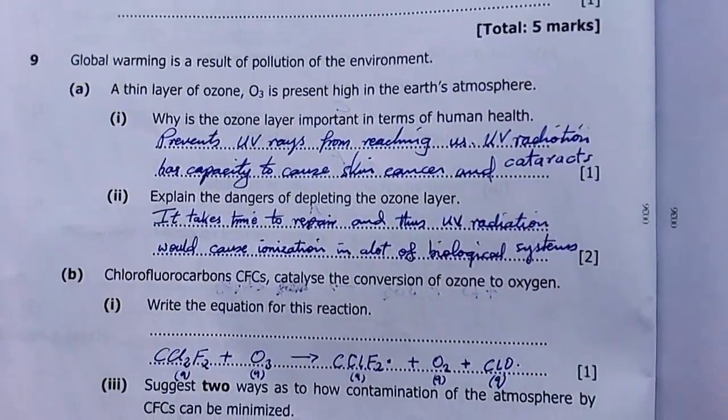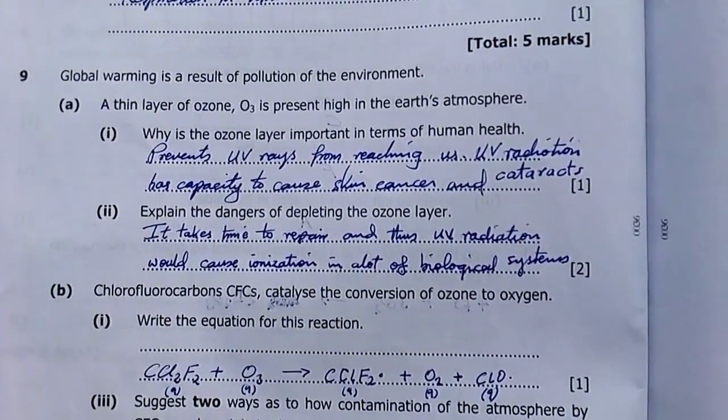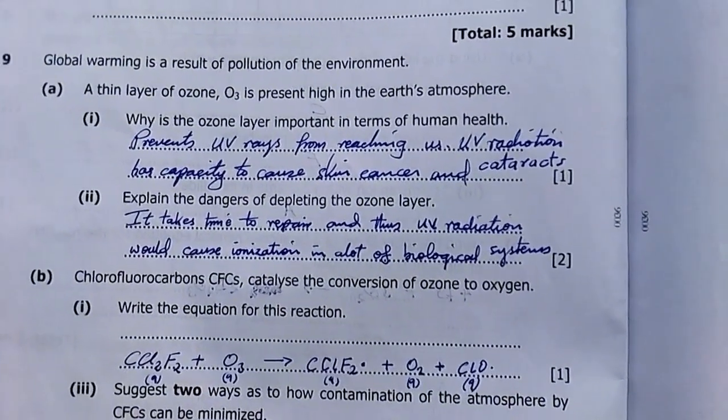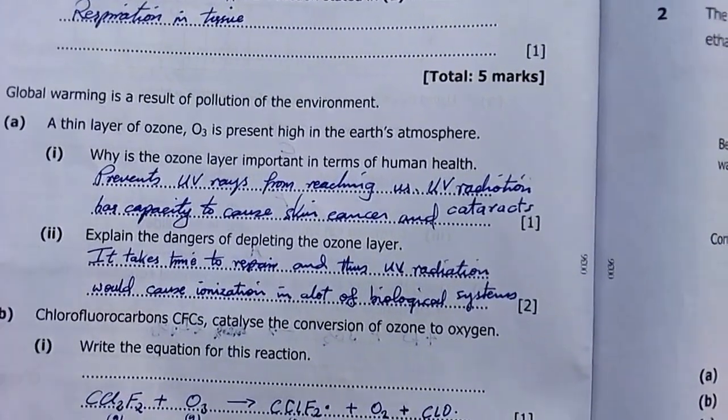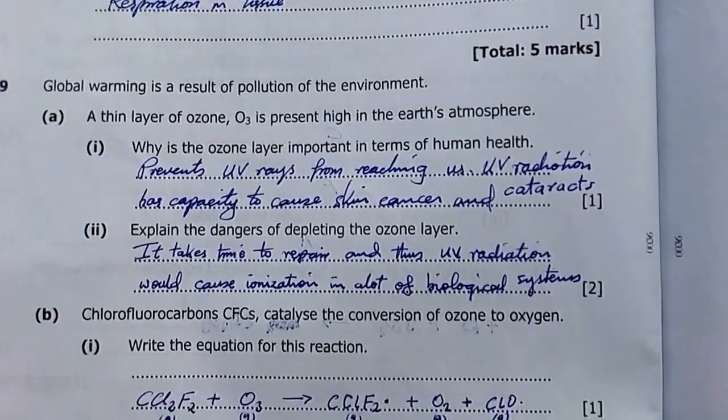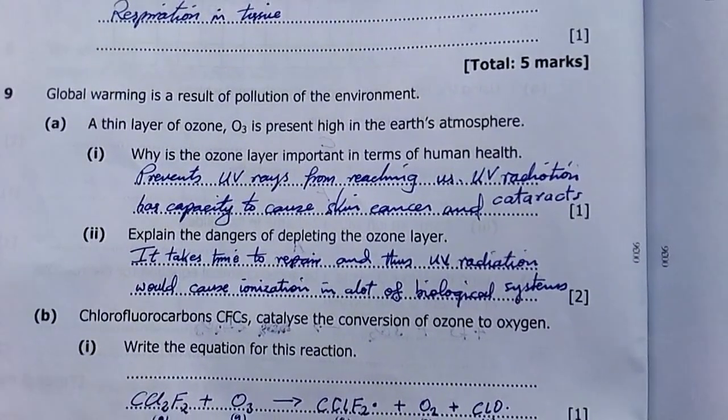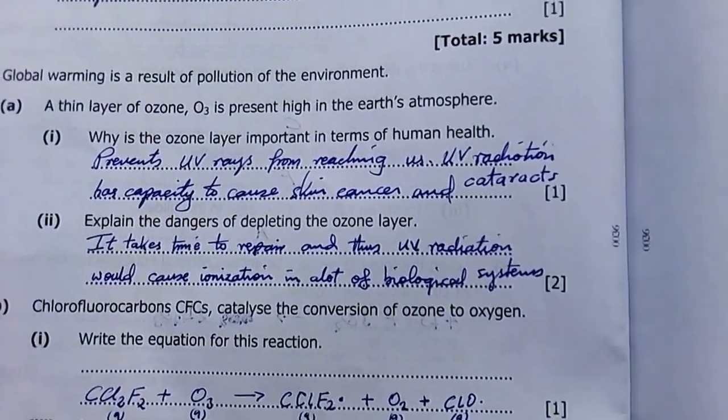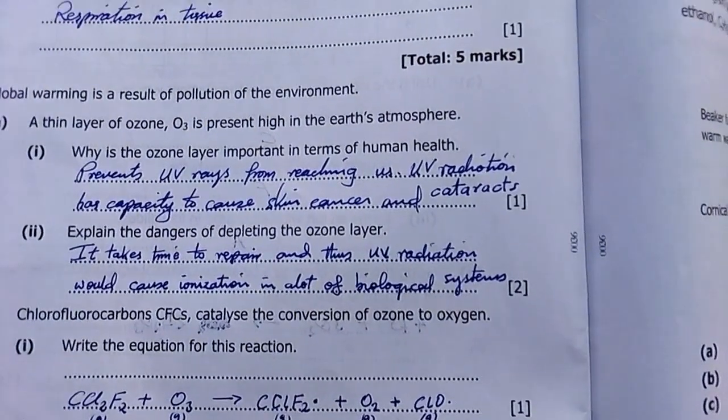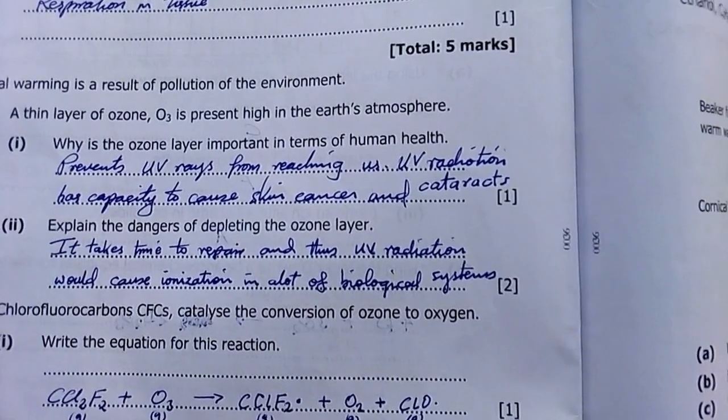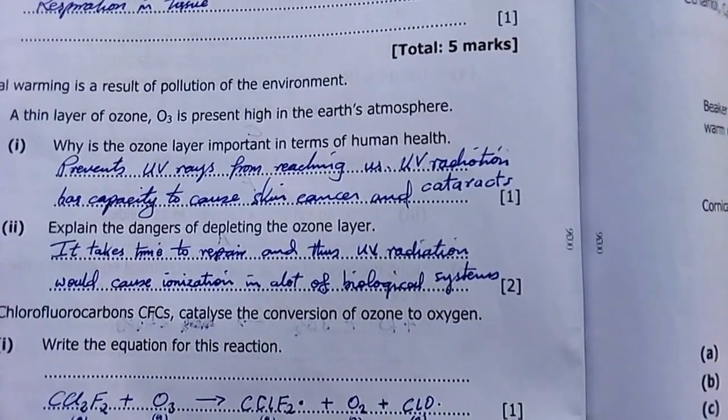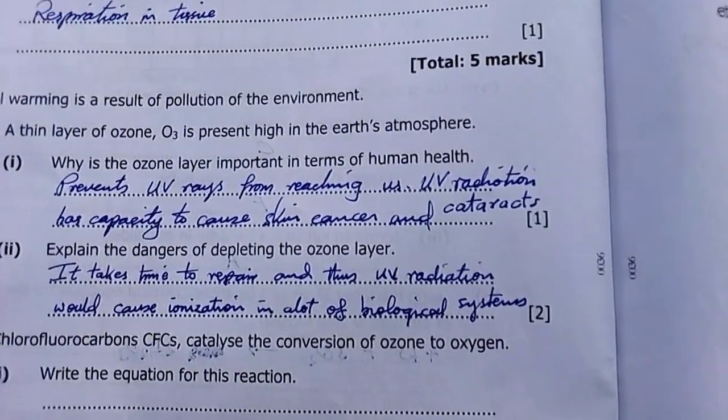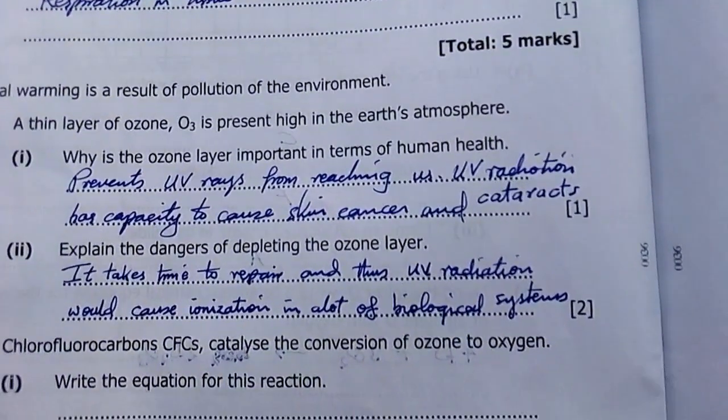Question 9: Global warming is as a result of pollution in the environment. A thin layer of ozone, O3, is present high in the Earth's atmosphere. Why is the ozone layer important in terms of human health? Prevents UVA and UVB rays from reaching us. UV radiation has capacity to cause skin cancer and cataracts in our eyes. That was my explanation.